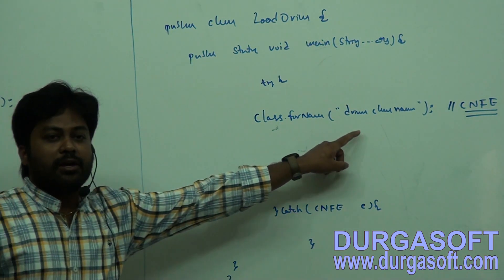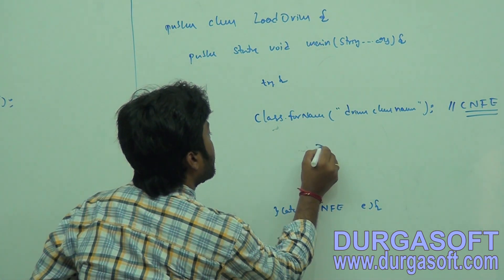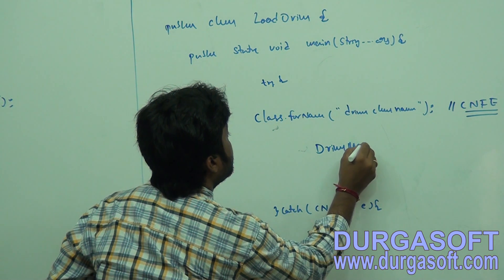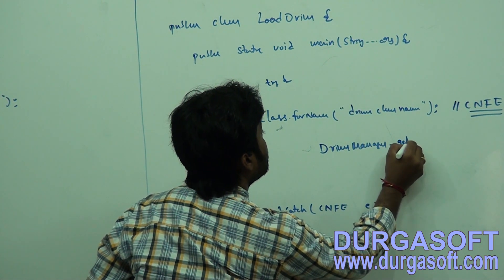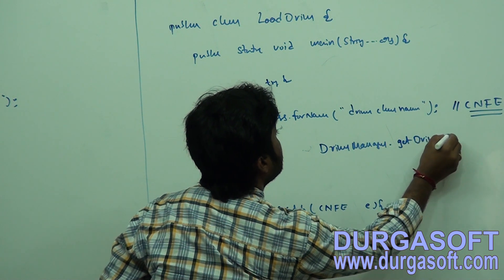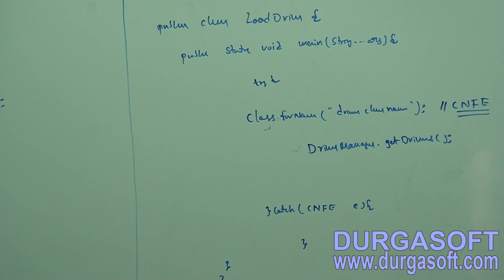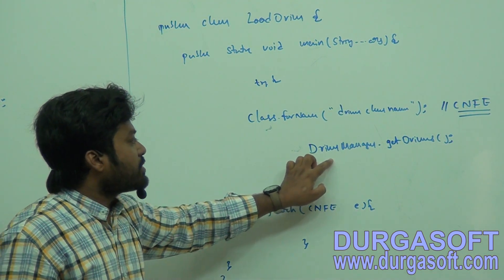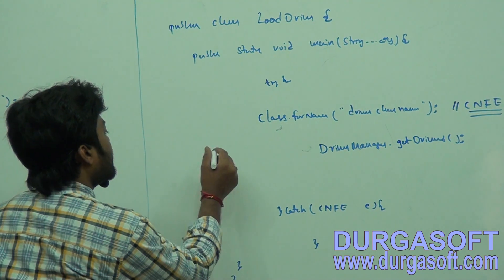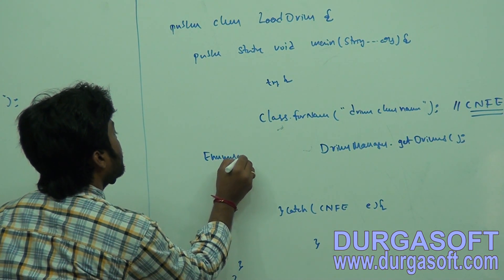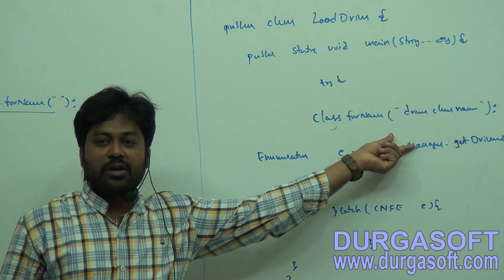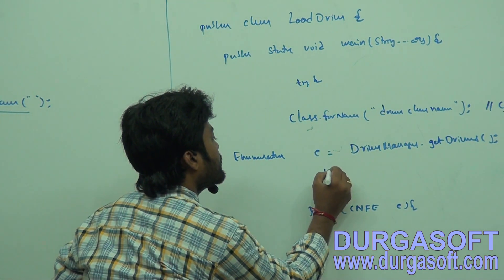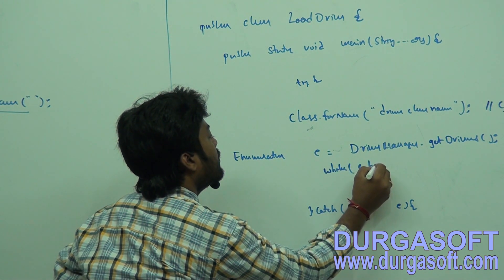Now, how can we find which driver we are loading? We have a DriverManager class. DriverManager has a method called getDrivers() - not getConnection(), which is used to get a connection. If you want to know which driver you are loading through Class.forName(), call DriverManager.getDrivers(). It will return an Enumeration object, and by iterating this enumeration you can find which driver is being loaded.